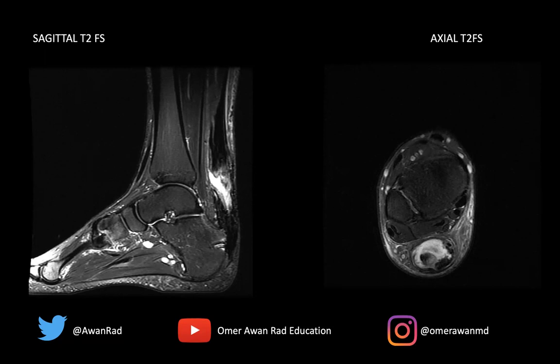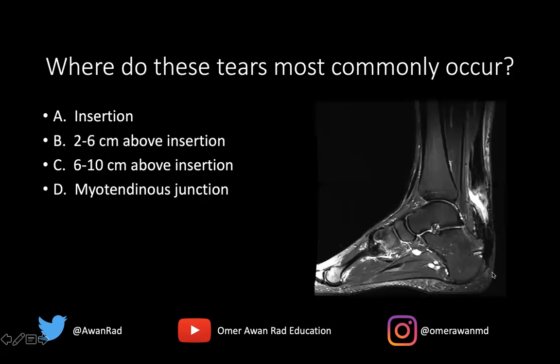Here we have a sagittal T2 FATSAT image of the ankle and an axial T2 FATSAT image of the ankle, and we have an obvious abnormality seen on these images. The question I have for all of you is: where do these tears most commonly occur? Is it at the insertion, 2 to 6 centimeters above the insertion, 6 to 10 centimeters above the insertion, or at the myotendinous junction?